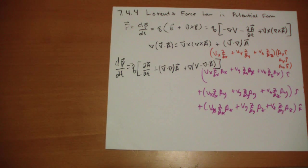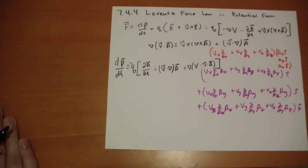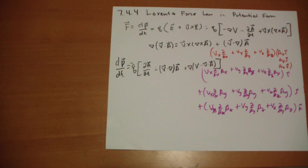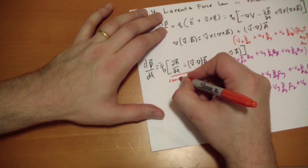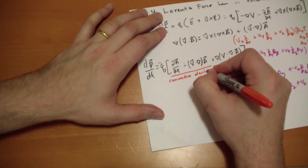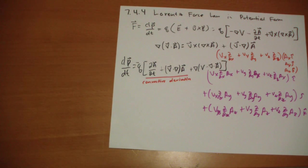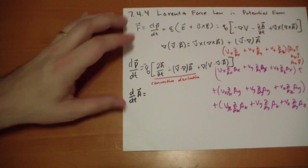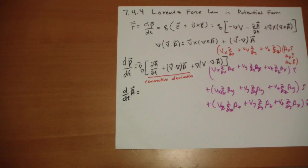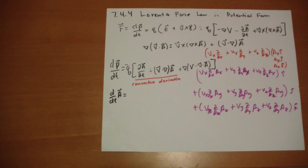That's the Lorentz-Force Law in potential form. These first two terms have a special name — they're called the convective derivative. If you have a particle moving through a field, it's actually the total derivative of A vector. It says how does A vector actually change, not just from the changing A vector at a particular point, but the fact that you're moving through that A vector.